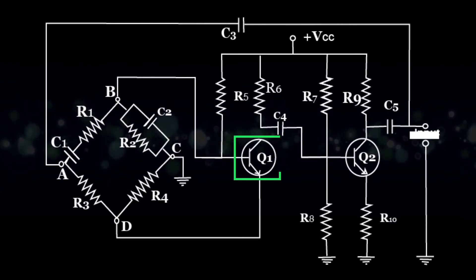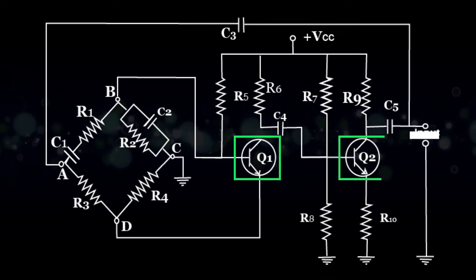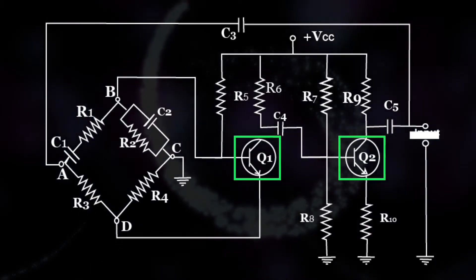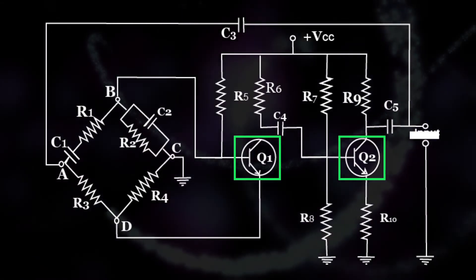From the above diagram, we can see two transistors are used for the phase shift of 360 degrees and also for positive feedback.